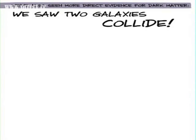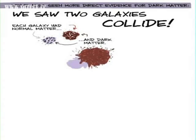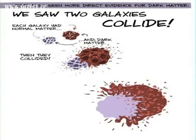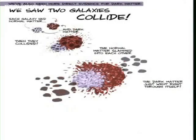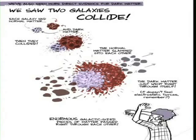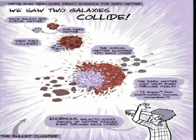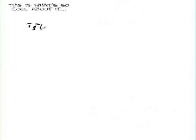We've also seen sort of more direct evidence for dark matter. We saw two galaxies collide. Actually, the result of their collision. And we can see these galaxies each had normal matter and dark matter. And then they collided. The normal matter slammed into each other. The dark matter just went through itself. These enormous galactic-sized pieces of matter pass through each other. And this is what's so cool about it, I think.